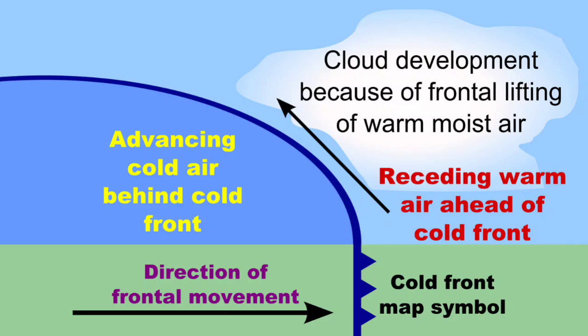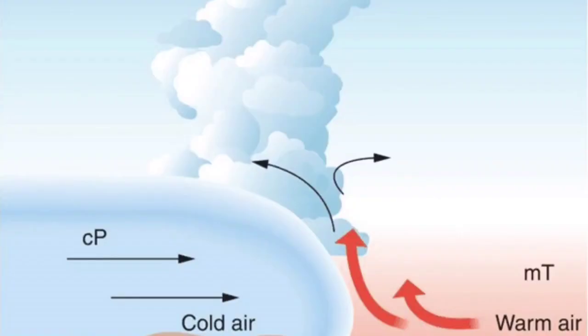Cyclonic rainfall is also called frontal rainfall, as when two different types of air mass — cold and warm — move towards each other, it leads to cyclonic circulation, forcing the warm air to rise high, leading to condensation and subsequent rainfall.